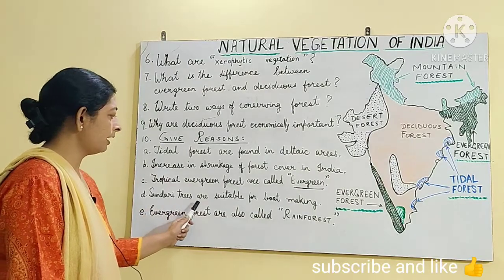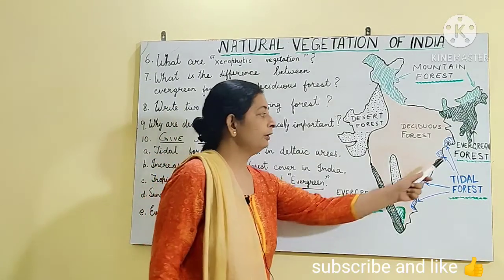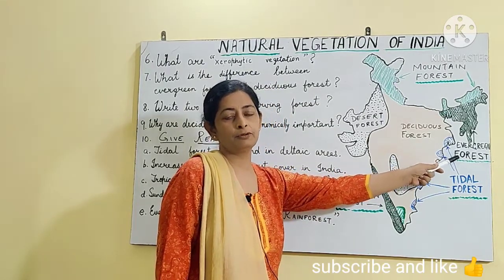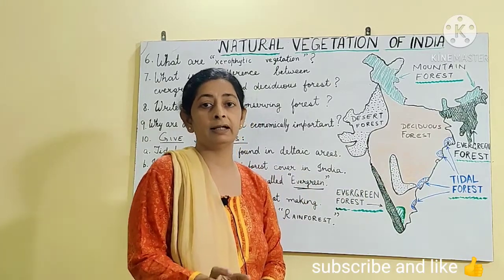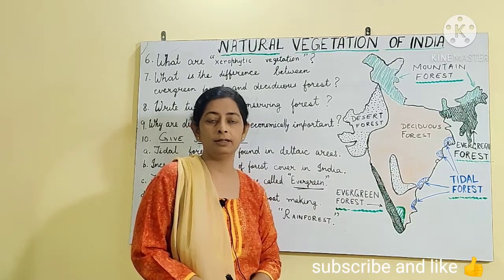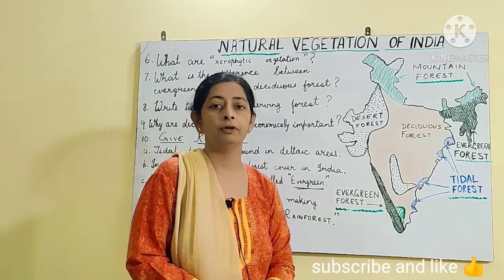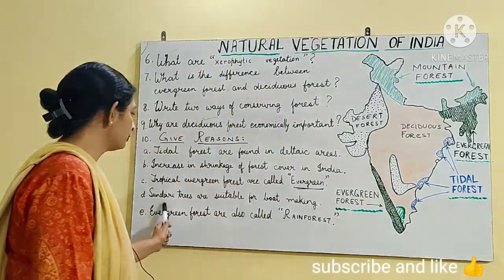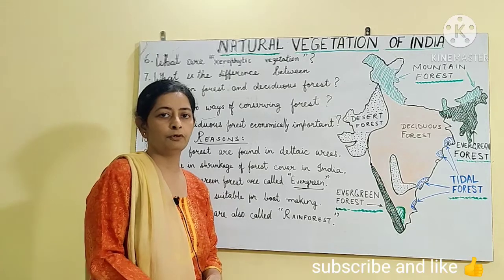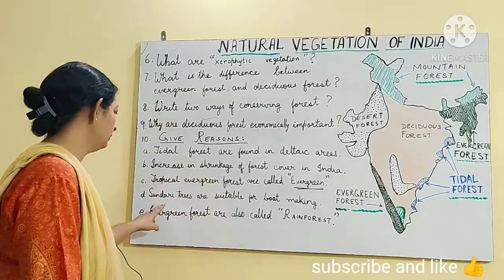Fourth: Sundari trees are suitable for boat making. The Sundari tree gets its name from the Sundarbans delta. The Sundarbans consists of large numbers of Sundari trees. The wood of the Sundari tree is hard, very strong, and very durable — meaning it lasts for a long time. Since boats are most of the time underwater, this hard, strong, and durable wood makes Sundari trees suitable for boat making.